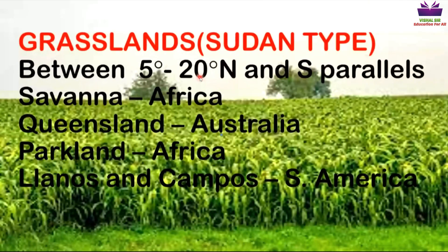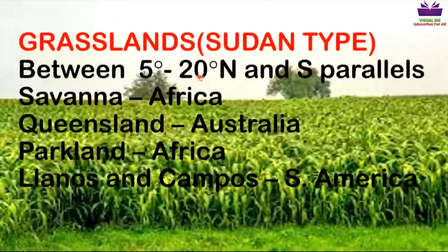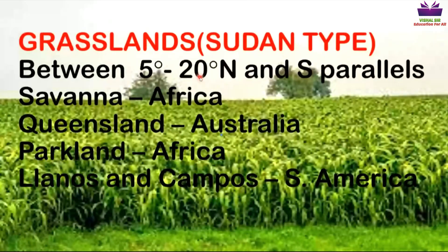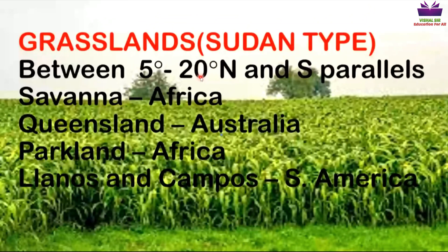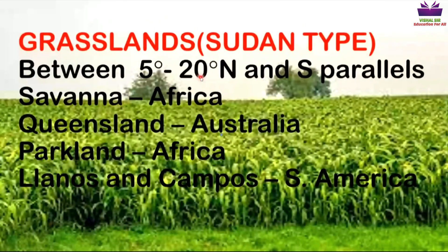Because this region is not very far from the equator, the summers are hot and humid and the winters are warm and dry. Summers are very hot due to the proximity to the equator.